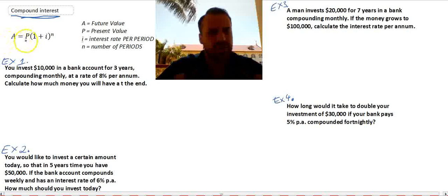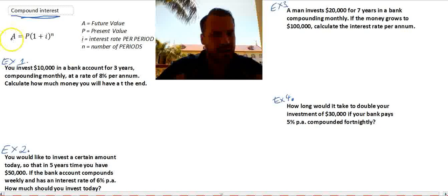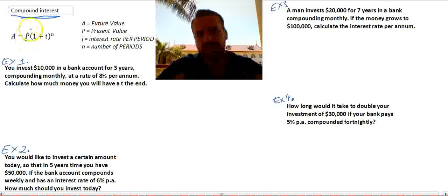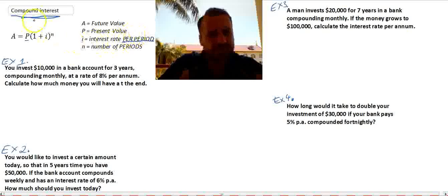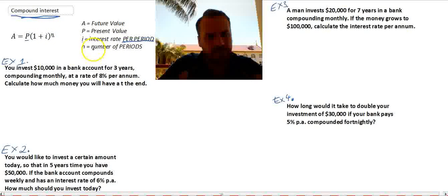So this formula is not going to be new to you. A equals P times 1 plus I to the power of N. Now, A is the future value of something, and P is the present value of something. Sometimes you use the word principle there. I is the interest rate, and I've put it here in really bold letters, interest rate per period. This is the bit that people are going to stuff up if they stuff up anything. And N is the number of periods.